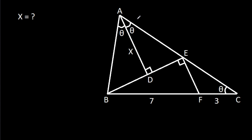In this video, we have been given that angle ADE is 90 degrees, angle BEF is 90 degrees, angle BAD is theta, angle EAD is theta, and angle BCE is theta, and BF is 7, CF is 3, AD is X. Then we have to find X.